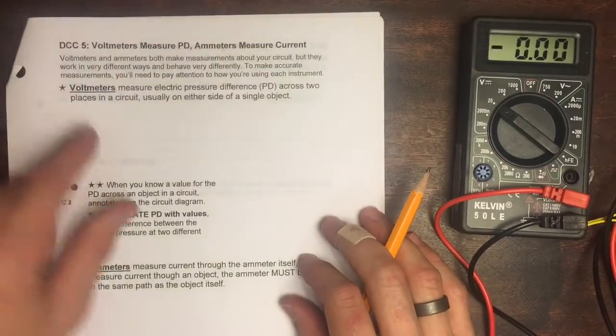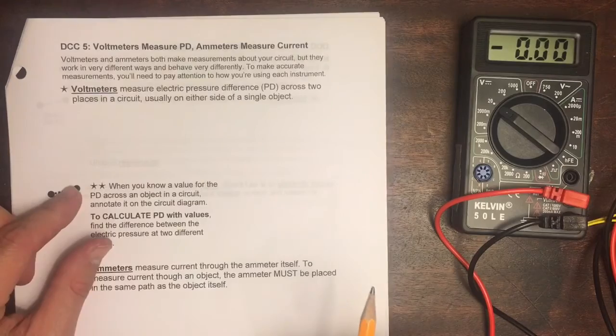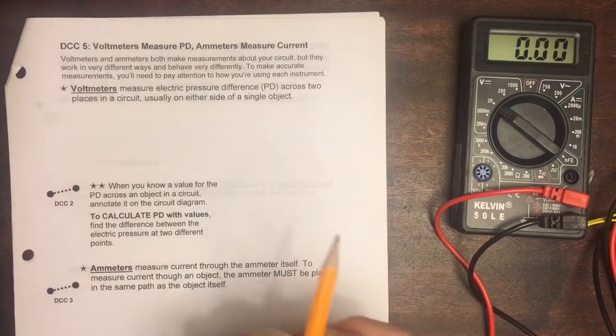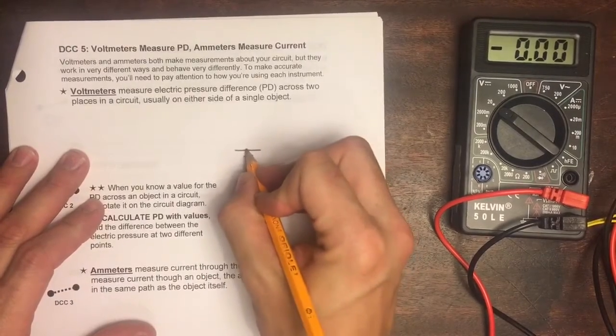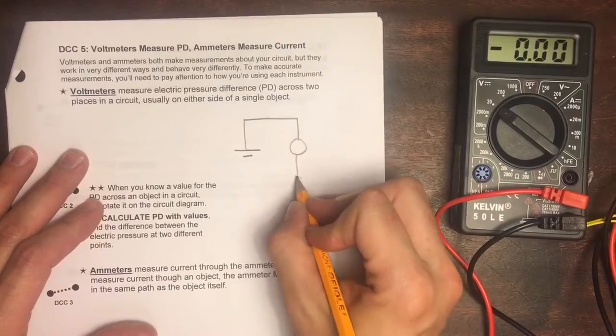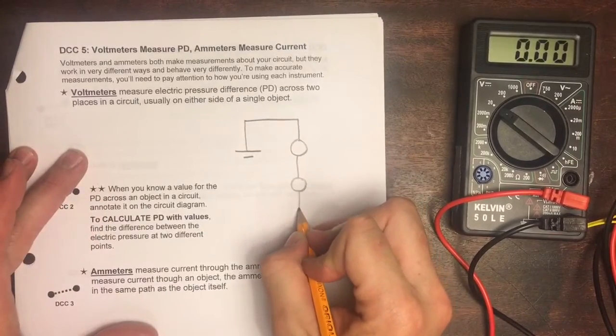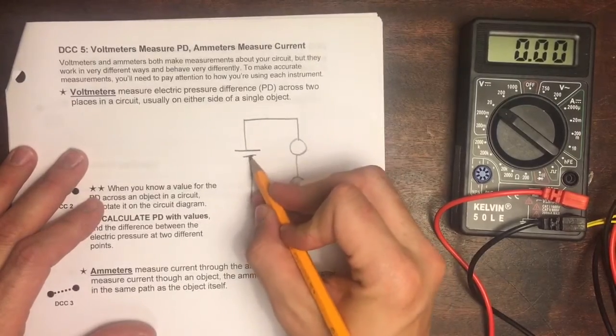So let's focus specifically on how we would think about a measurement of pressure difference. Let's think about a circuit that's got a battery and say a bulb and another bulb. This circuit is slightly different from our circuit that we just identified.